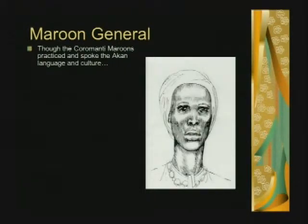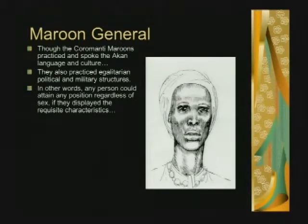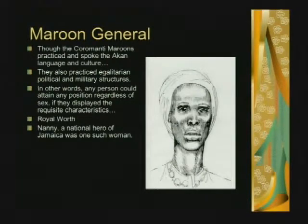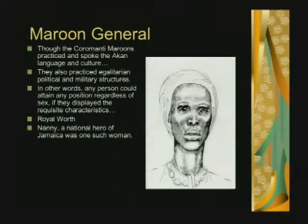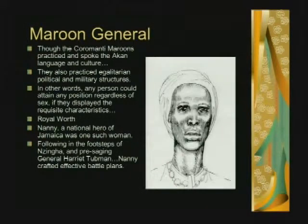Here's what happened: the Akan also had egalitarian political and military structures — any person could attain any position regardless of sex if they displayed the requisite characteristics. This is Nanny of the Maroons, a national hero of Jamaica. Speaking the Akan language, the Coromanti Maroons organized military tactics, and she was the general. She trained her armies by essentially establishing a system where she could tell them stories, fables, and battle tactics — following the footsteps of Nzinga and presaging General Harriet Tubman.